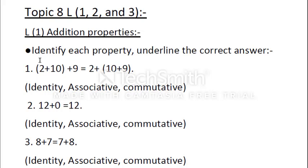We have the same addends on the left and right side, but we only change the place of the parentheses. The third property is the Identity property, also called the Zero property. If you add any number to 0, you get the same number. For example: 12 plus 0 equals 12, 4 plus 0 equals 4, and using the commutative property: 6 plus 0 equals 0 plus 6 equals 6.